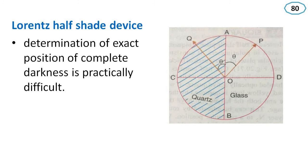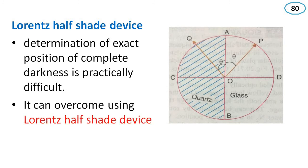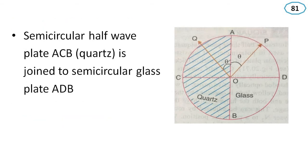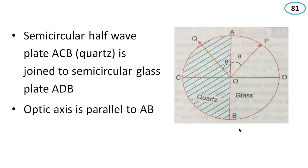Determination of the exact position of complete darkness is practically difficult. This can be overcome by using the Lauren's half-shade device. The Lauren's half-shade device is made up of glass. A semi-circular half plate ACB of quartz is joined with a semi-circular glass plate ADB. The optic axis of the quartz portion is parallel to AB.